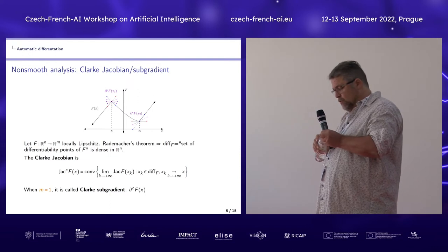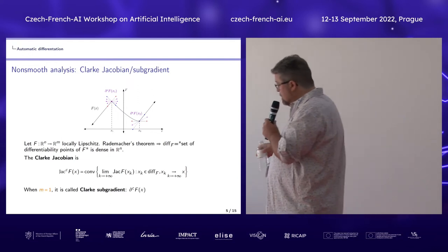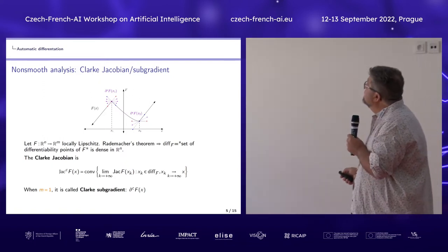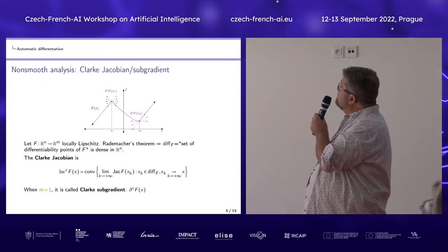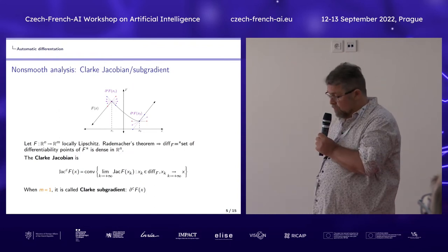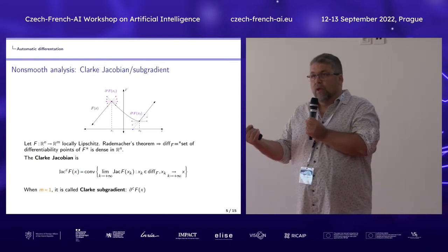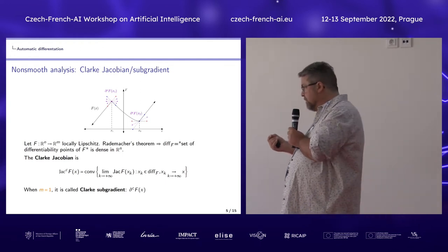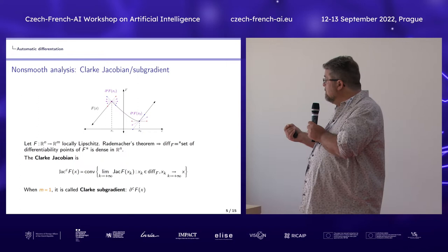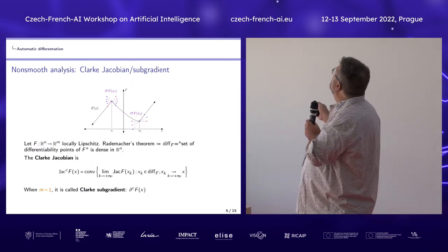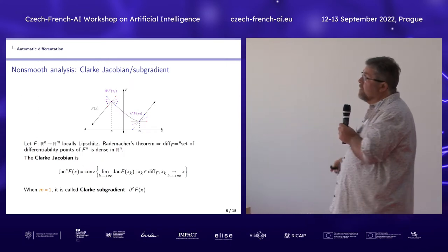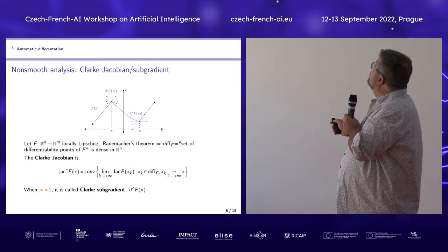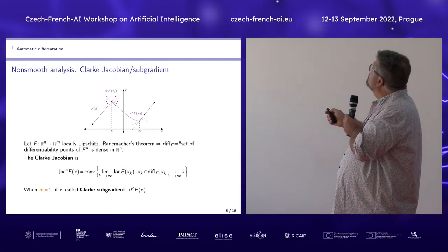We need to use Clarke Jacobians. Clarke Jacobians are a way to model differentiation at non-smooth points. At a non-smooth point, you define a subgradient as the limit of neighboring points. You obtain a bunch of subgradients, and you are allowed to convexify this. These guys represent non-smooth derivatives.